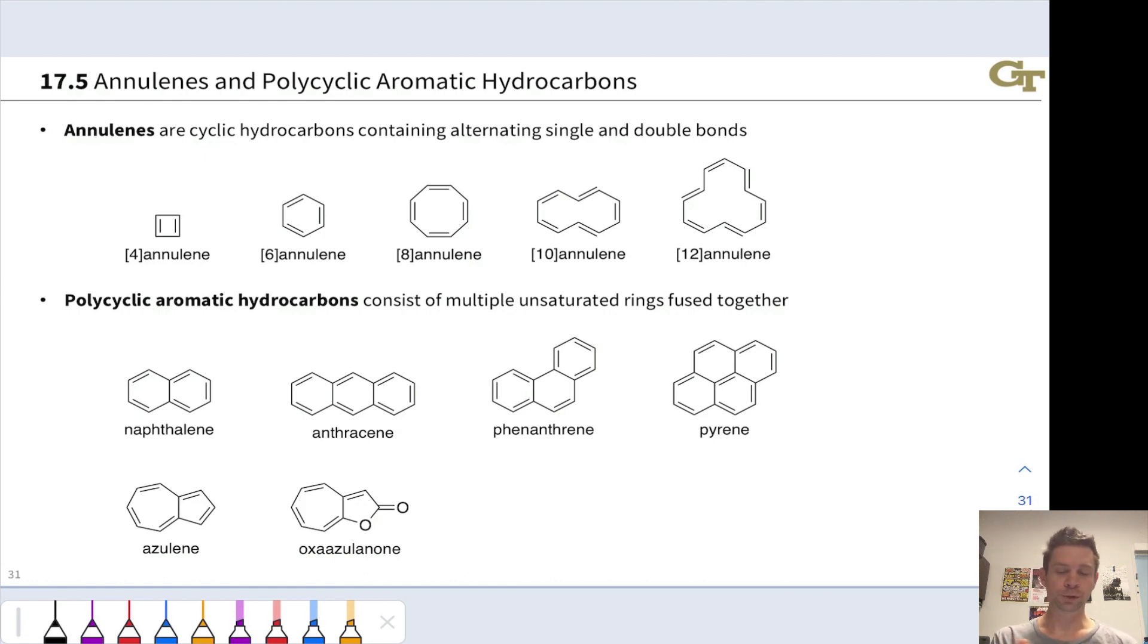For example, cyclobutadiene is equivalent to 4-annulene with four atoms in the ring. Benzene is equivalent to 6-annulene, and these terms are very rarely used. Where the term annulene gets most useful is when you get to ring sizes of, say, 9 or higher, where the naming gets awkward.